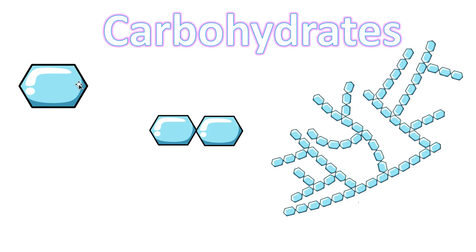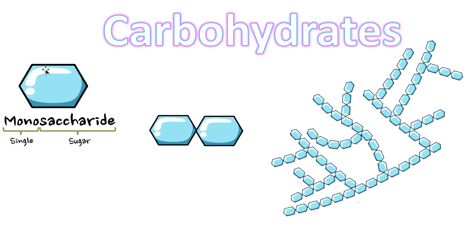The basic subunit — the smallest building block — is this one here, because putting them together forms a larger one, and putting many together forms an even bigger one. Think of it like a Lego: the smallest piece is the foundation. We call the smallest building block of a carbohydrate a monosaccharide. 'Mono' means single, so a single unit.